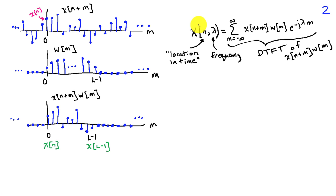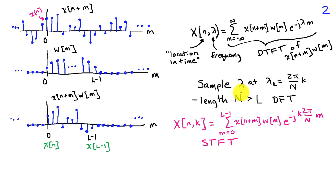The notation here is interesting because n is a discrete valued quantity, so I'm using a square bracket on the left hand side. Lambda at this point is continuous, so we have a parenthesis to indicate the continuous variable. We're going to sample the DTFT like we've done before, evaluating at frequencies lambda k which are 2 pi over n times k. This implies we're using a length n discrete Fourier transform, and we'll assume that n is bigger than the duration of the window in general.